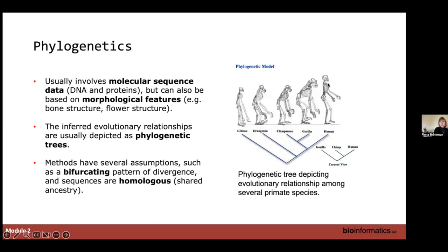For phylogenetics, this usually involves molecular sequence data — looking at DNA and proteins — but note that phylogenetics can also be based on morphological features that have some sort of potential homology or shared ancestry. We infer these relationships usually using phylogenetic trees. Here's a tree looking at some relationships among primate species, showing bifurcating patterns. One of several assumptions in many phylogenetic methods is that you have a bifurcating nature rather than one point branching to many.